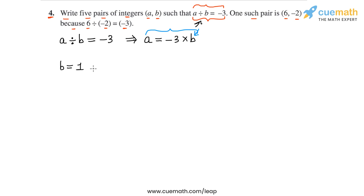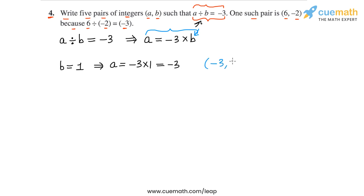For our first pair, let's take b equal to 1. So for b equal to 1, we get a equal to minus 3 times 1, which is minus 3. So one pair we can take is a equal to minus 3 and b equal to 1.